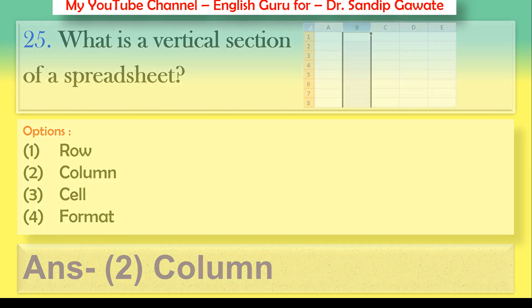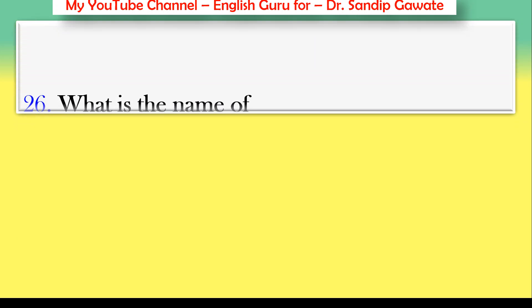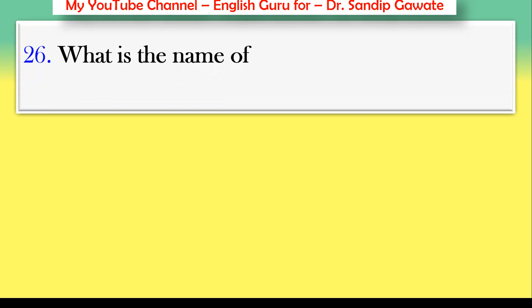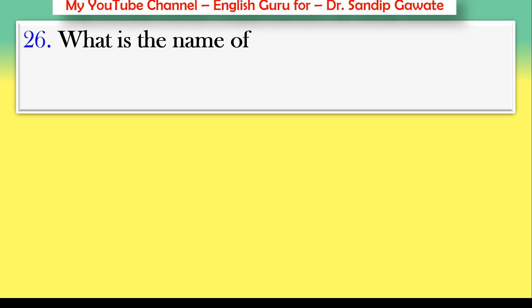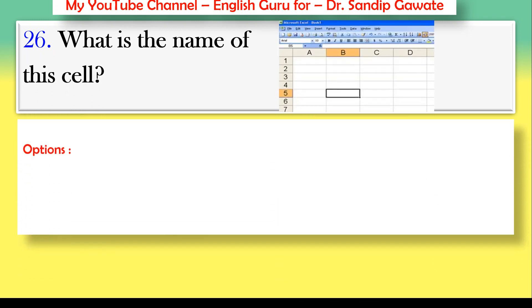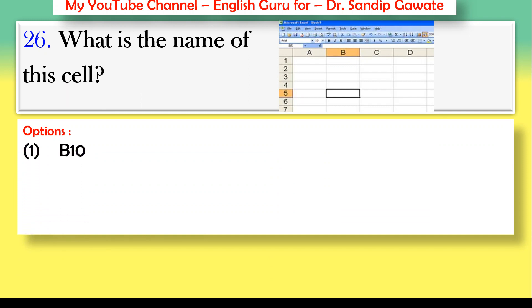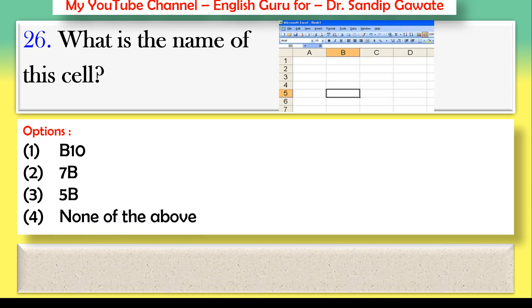Question 26: What is the name of this cell? The image shows a highlighted cell. Options: B10, 7B, 5B, or none of the above. The correct answer is 5B — you can check the image where 5 and B are highlighted with color.